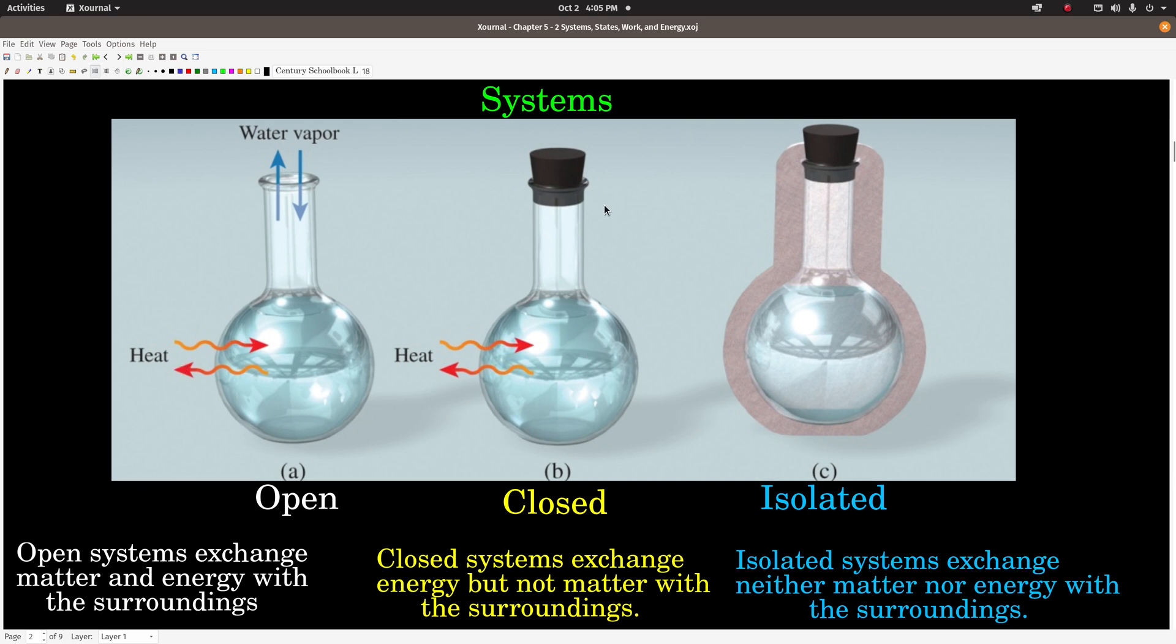A closed system is basically what we have if we put a stopper in that flask. Now this system cannot exchange matter with the surroundings, but it can still exchange energy. So a closed system can exchange energy but not matter with the surroundings. The water now cannot go in and out, it's closed, but the energy, the thermal energy or whatever type of energy, still can.